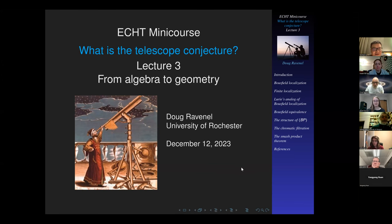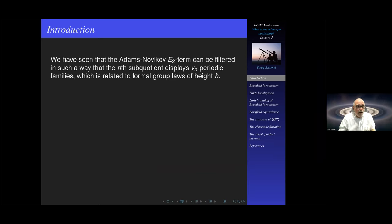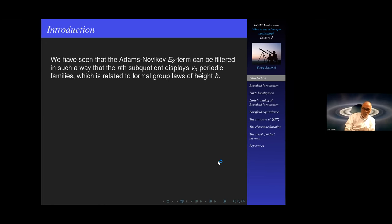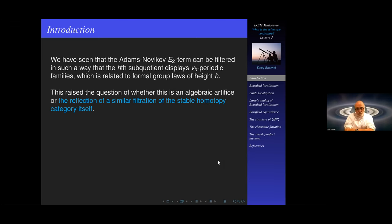Last time we saw that in the Adams-Novikov E2 term there's an interesting filtration in which the sub-quotient displays v_h-periodic families, and v_h-periodic families are related to formal group laws of height h. The question I was asked at the end — which I'm going to answer now — is whether this algebraic structure is for real, in the sense that it reflects a similar filtration in the stable homotopy category itself. The answer is yes, and I'm going to explain today how that works.